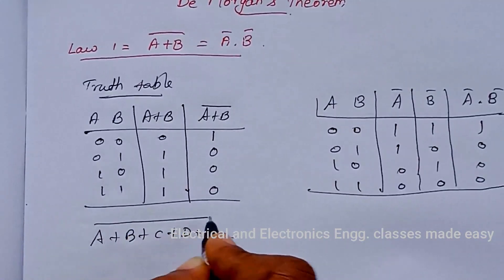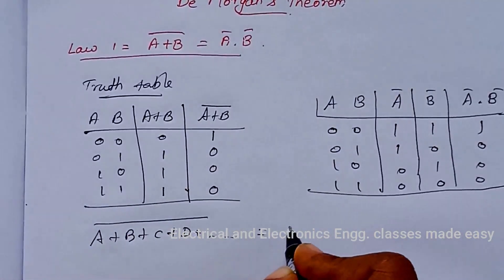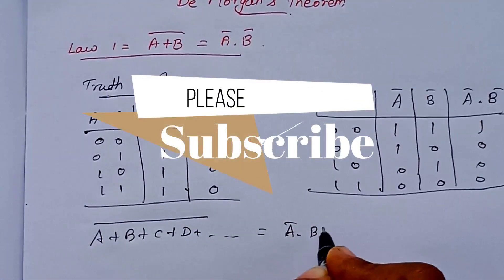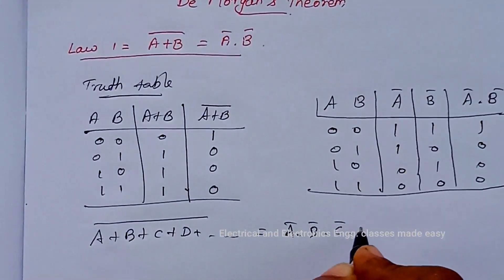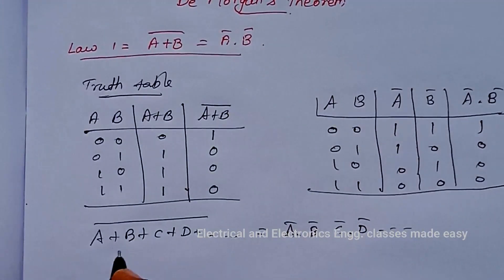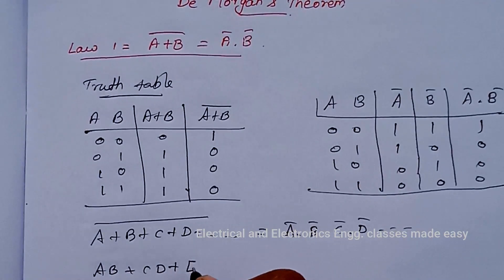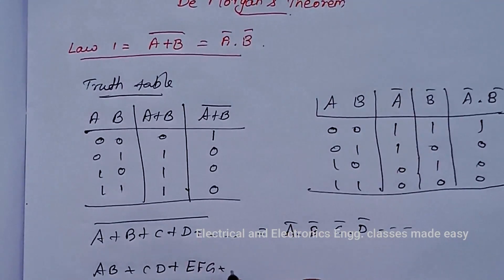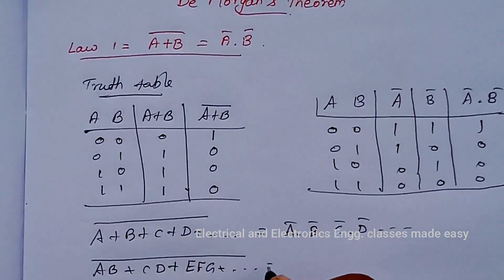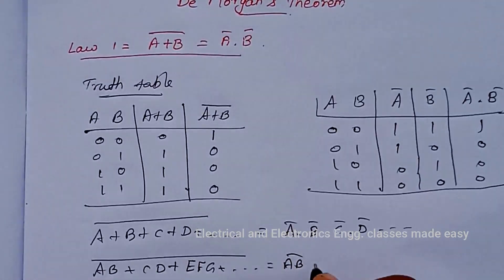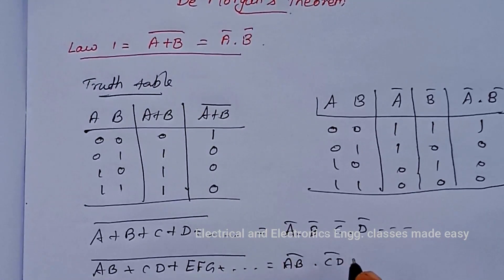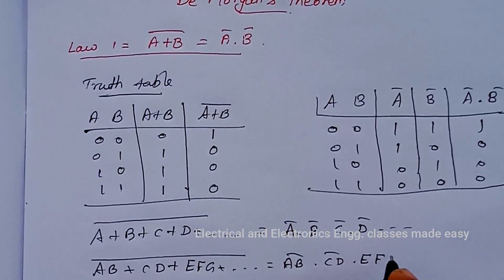Also, A plus B plus C plus D plus etc., whole bar, is equal to A bar dot B bar dot C bar dot D bar dot etc. And also, AB plus CD plus EFG plus etc., whole bar, is equal to AB bar dot CD bar dot EFG bar, etc.